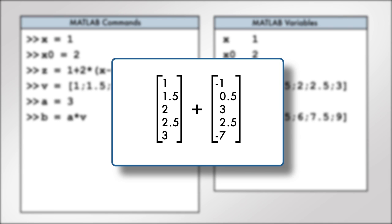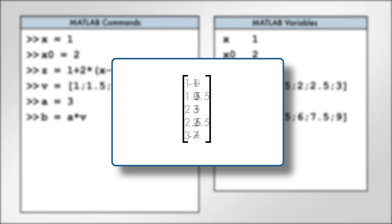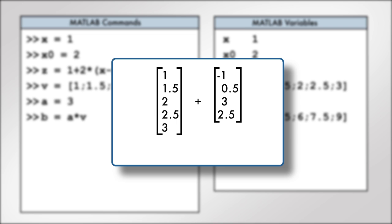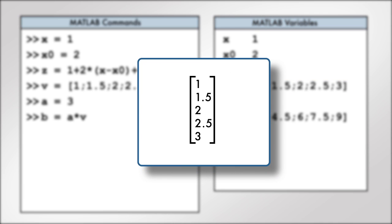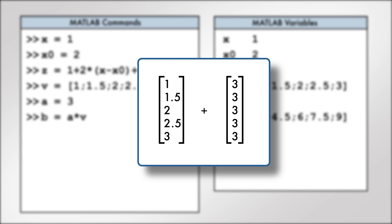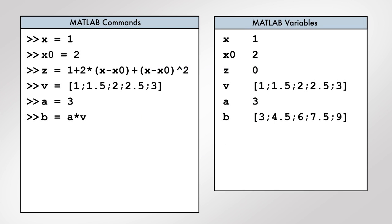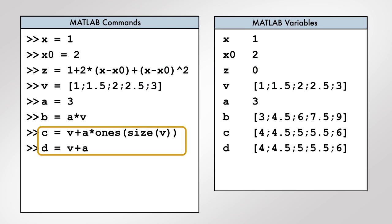Addition and subtraction of arrays in MATLAB are the same as in mathematics. Two arrays can be added or subtracted only if they are the same size; if the arrays are not the same size, an error is generated. What if we wanted to add the same value to each element of v? One approach is to create a vector the same size as v where each element equals the value being added, then add the vector to v. In MATLAB, these are equivalent commands — when defining d, MATLAB automatically expands the scalar into a vector of the appropriate size.